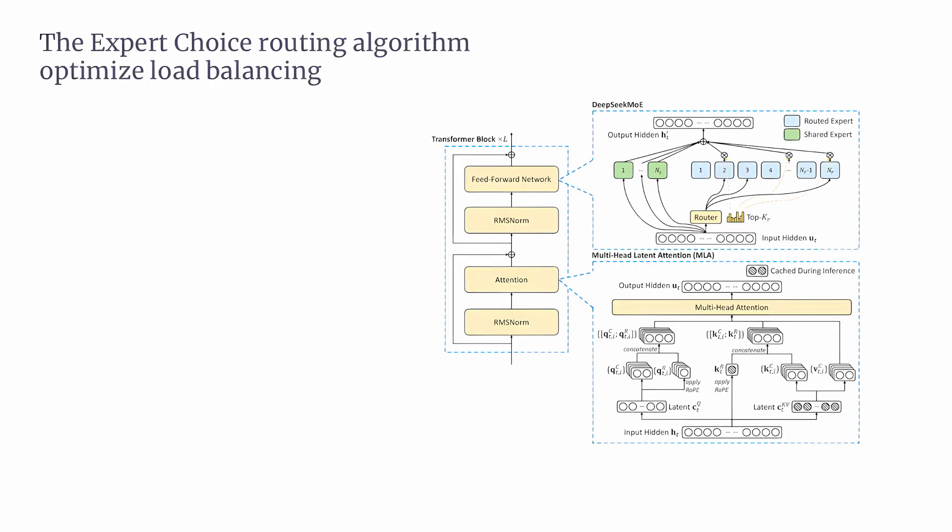Now let's talk about the expert choice, EC, routing algorithm in DeepSeek. This algorithm plays a crucial role in optimizing how the model balances the workload among its many experts. It's designed to address common problems in traditional mixture of experts, MoE, models — like underutilization, when some experts aren't used enough, and overloading, when some experts are used too much.